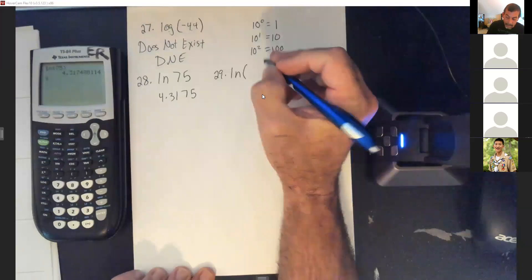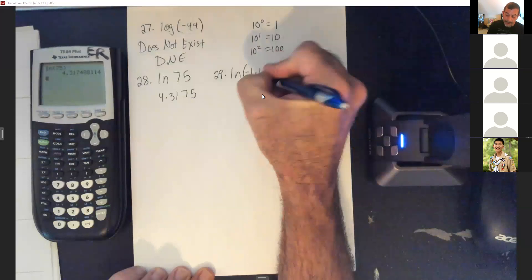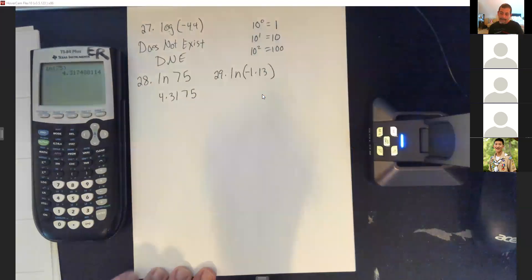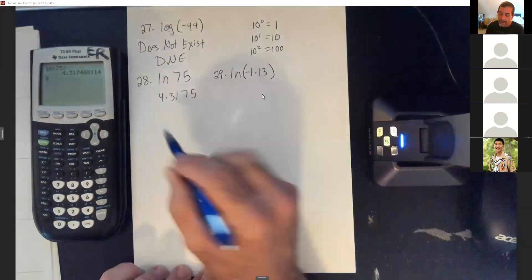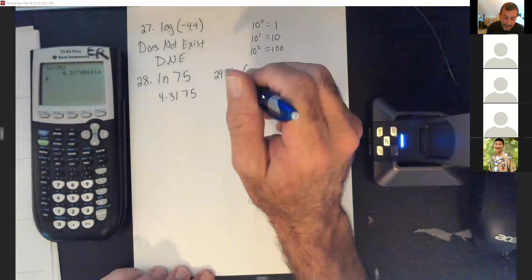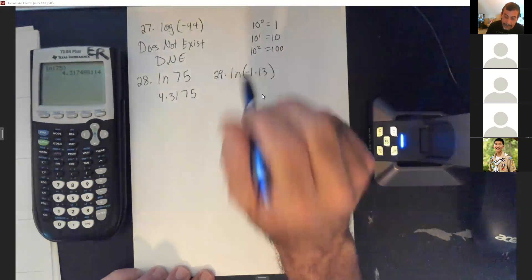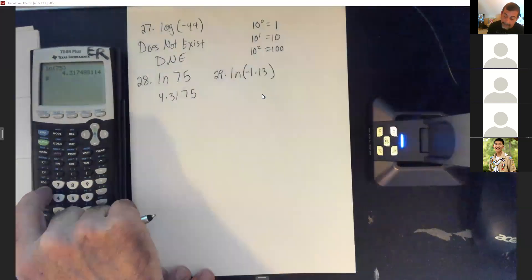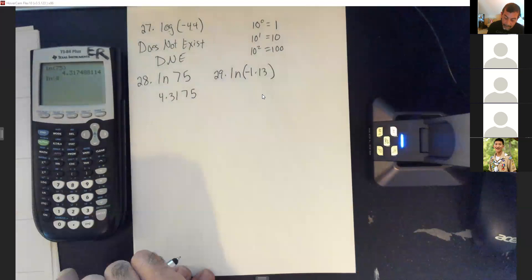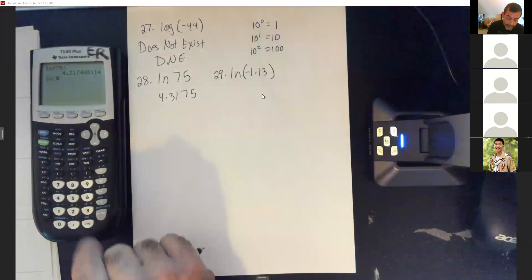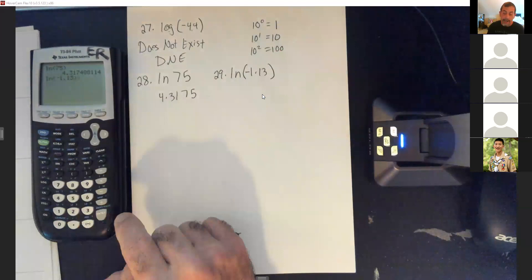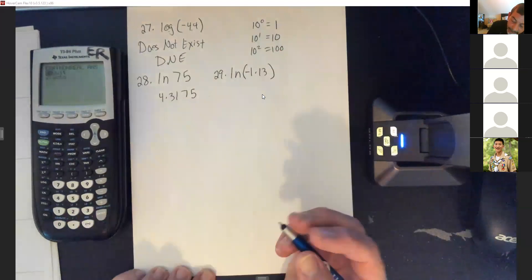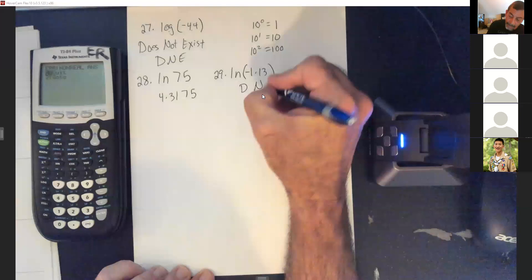What about ln of negative 1.13? If you can't take a log of a negative number, you can't take a natural log of a negative number either. Hit ln, enter negative 1.13, hit enter — non-real answer. So this does not exist.